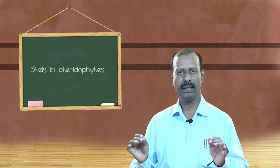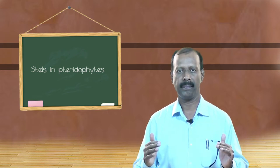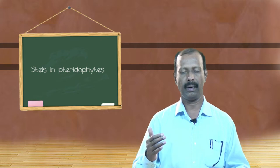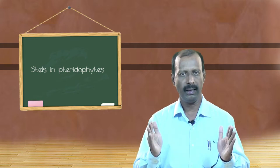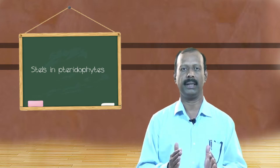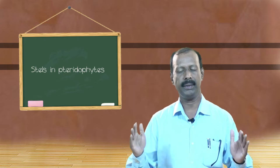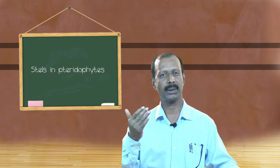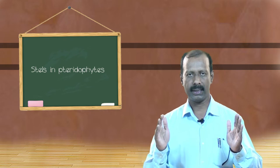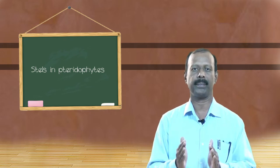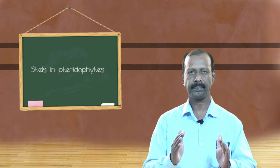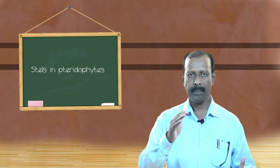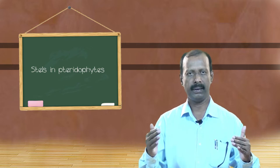The second type of stele is siphonostele. As the meaning of the word siphono goes: tube or medulla or pith. That means the stele containing the pith is called siphonostele. In siphonostele, we can see the simple siphonostele as well as the solenostele. Simple siphonostele is the one where the central core is represented by the pith or medulla, which is represented by parenchymatous or sclerenchymatous tissue, and the pith is surrounded by xylem, then phloem.